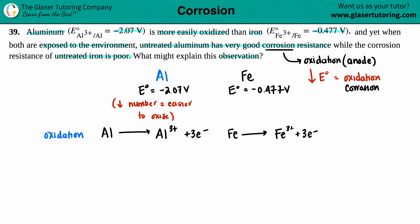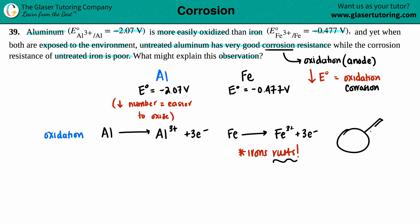What happens to iron over time? Iron rusts — it turns a different color. If you think of a cast iron skillet, it's normally coated in a grayish-black color. The number one rule for owning a cast iron skillet is that you cannot leave it with water or expose it to the environment with water droplets, because the iron will start to rust and change to a copperish-orange color.